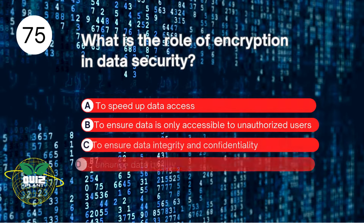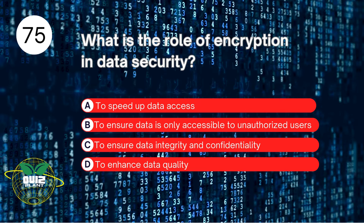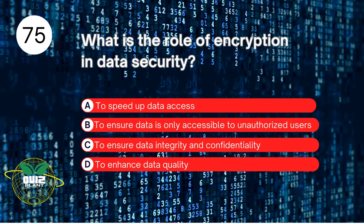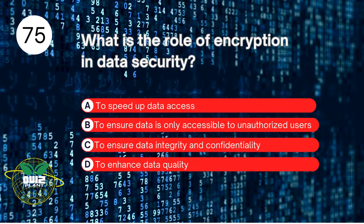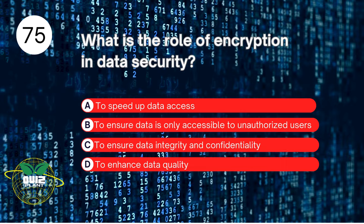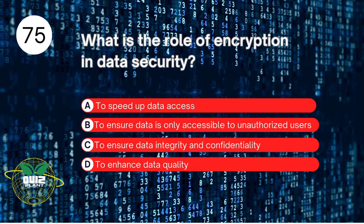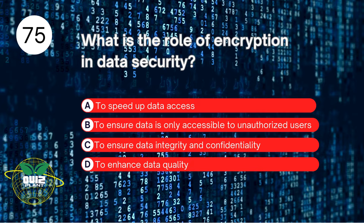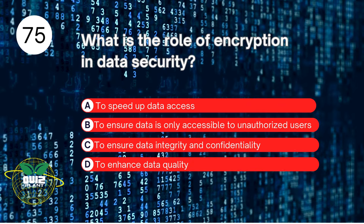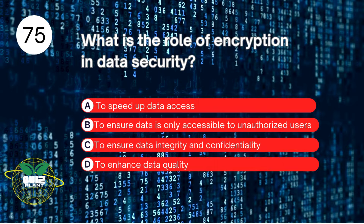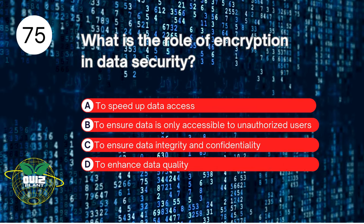Number 75. What is the role of encryption in data security? A. To speed up data access. B. To ensure data is only accessible to unauthorized users. C. To ensure data integrity and confidentiality. D. To enhance data quality. The answer is C. To ensure data integrity and confidentiality.